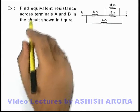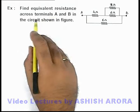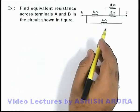In this example we are required to find the equivalent resistance across terminals A and B in the circuit shown in figure.